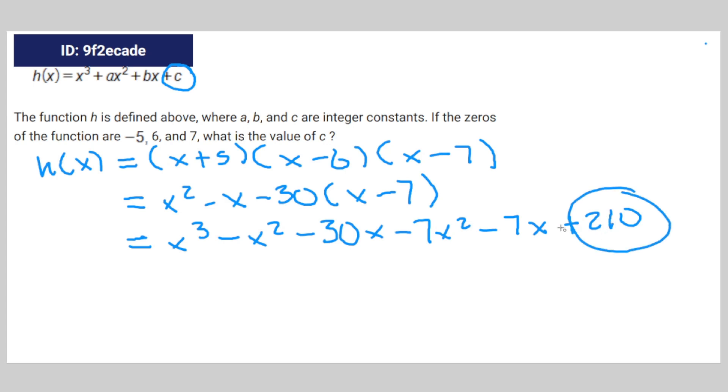And 210 is the only constant not connected to the variable x. And in the original equation h of x right here, c is the only constant not connected to a variable either. Therefore, 210 is equal to c.